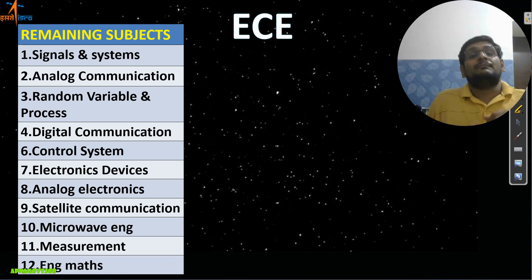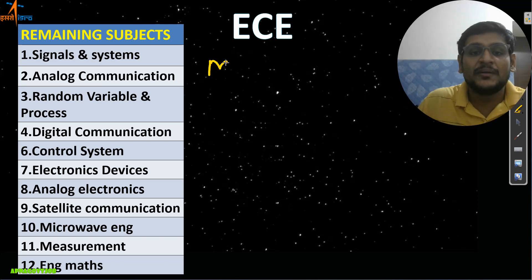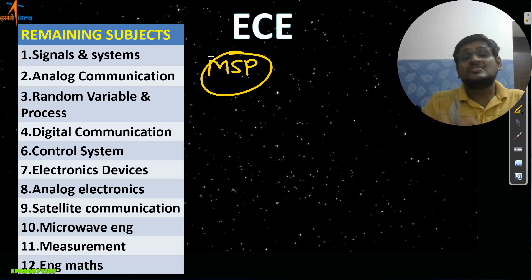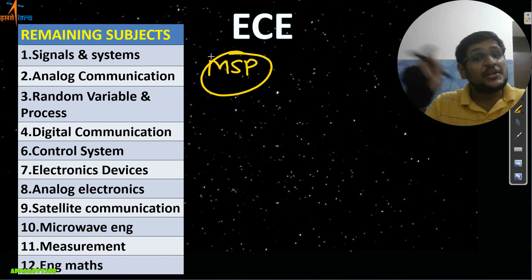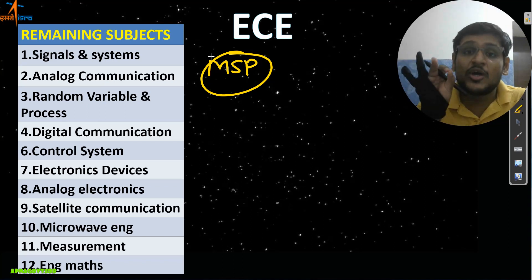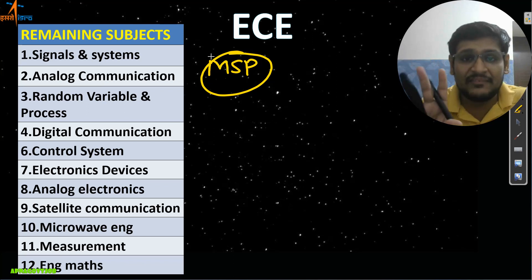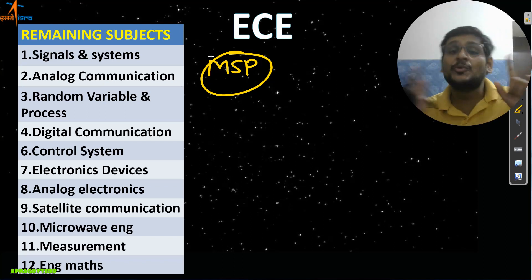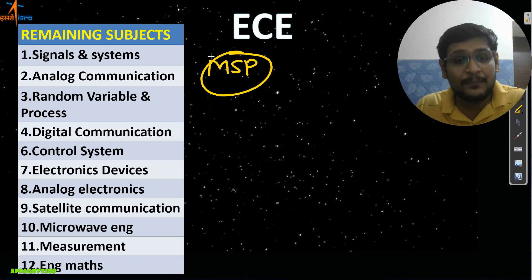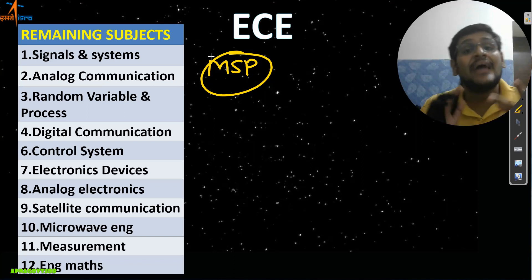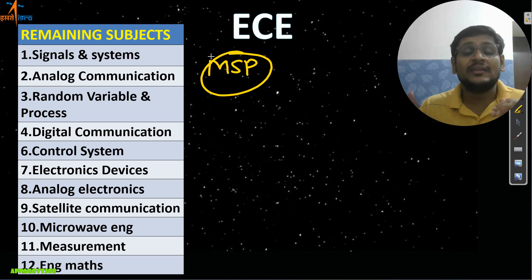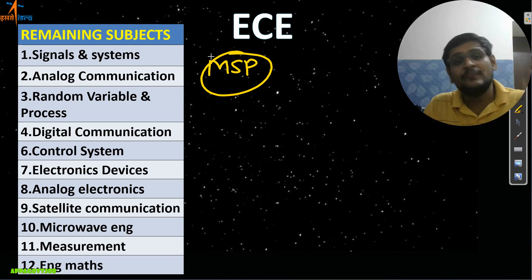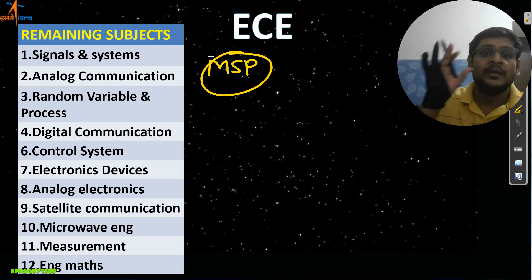Now the first branch: Electronics and Communication. For MSP students, I hope you are following our block-wise strategy rigorously — currently Block Three is going on and we will enter Block Four in one to two days. Follow the block-wise strategy completely. Those who haven't joined the Master Success Pack for Electronics can get the link in the comment section. We will cover everything including CBT and interview, so join as soon as possible.